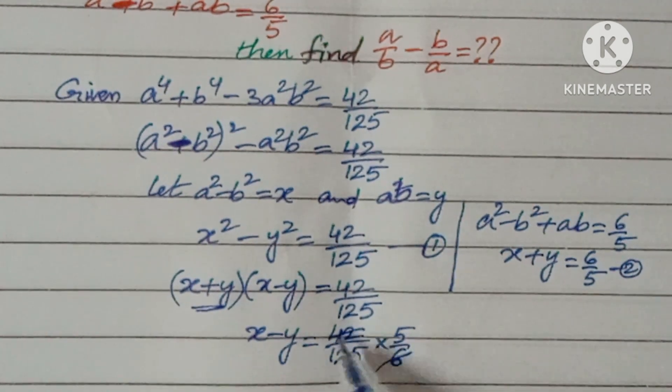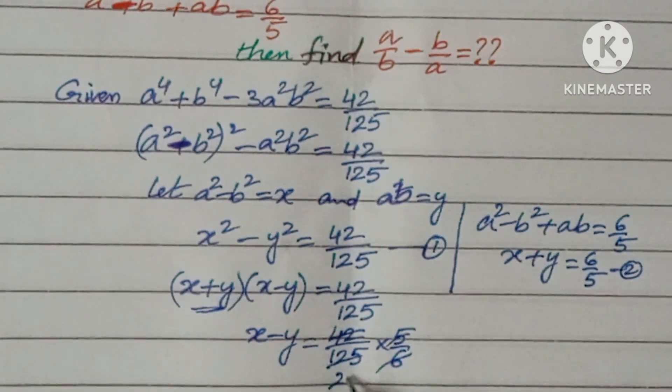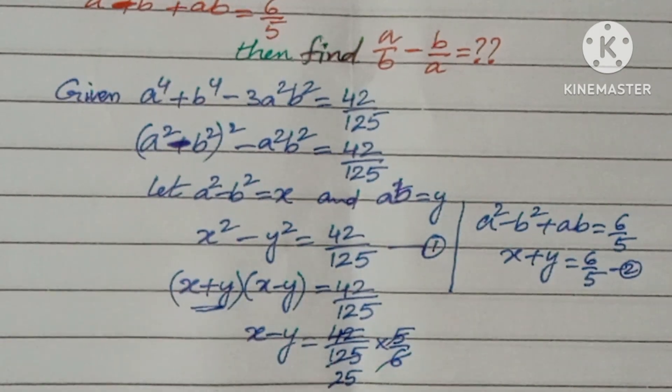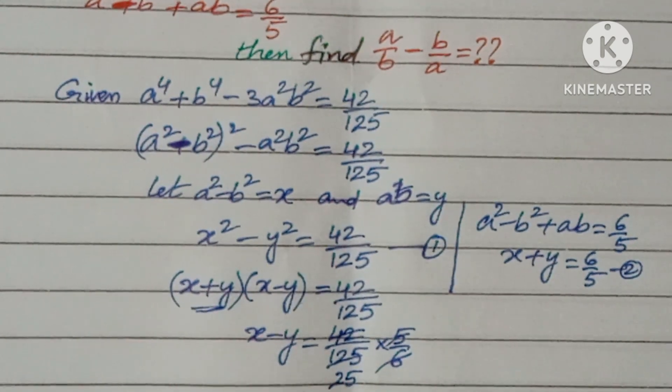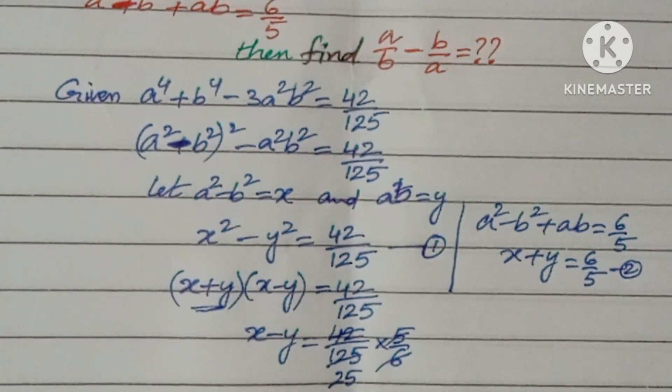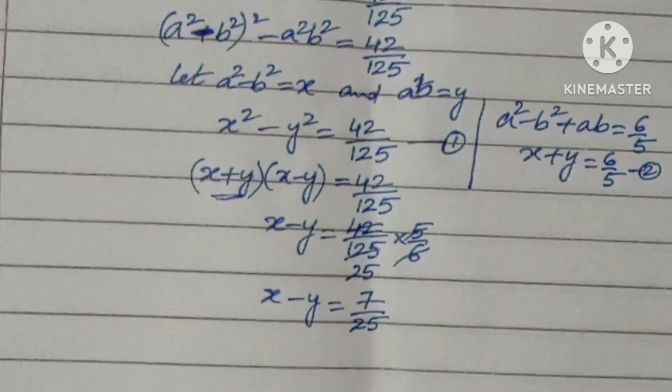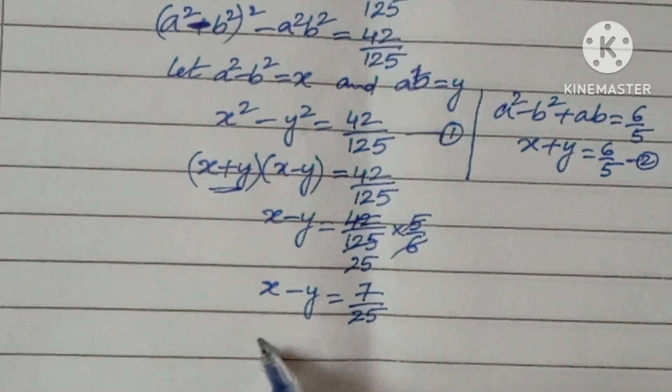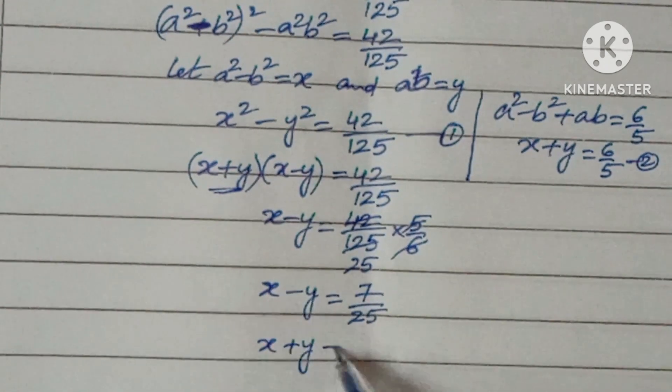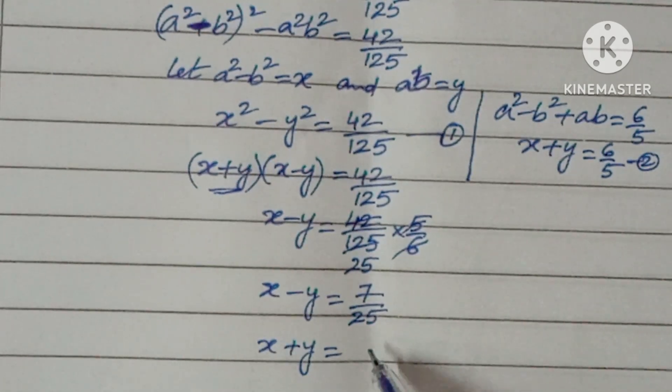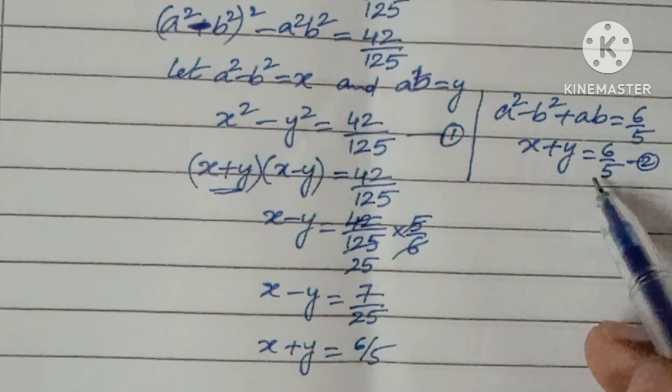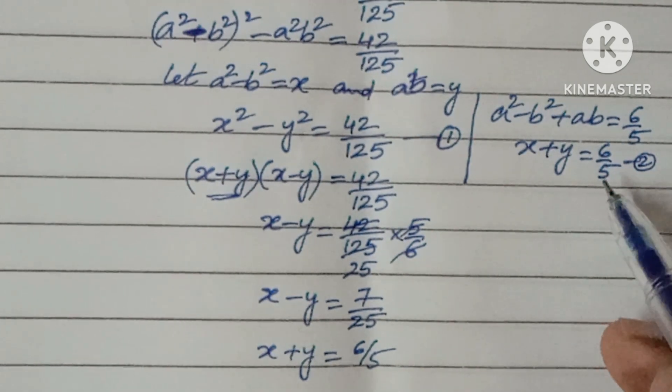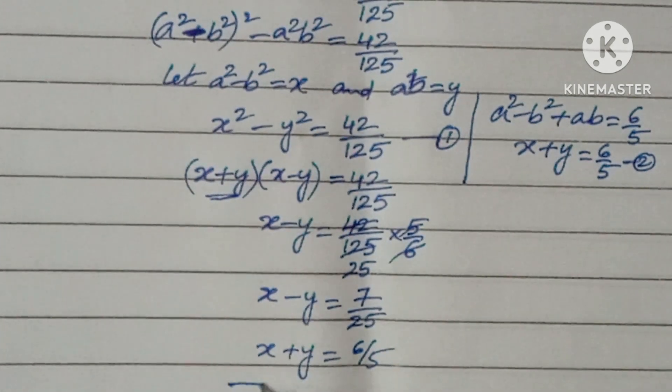So here some cancellation will be there. So the value will get x - y = 7/25. x + y = 6/5. Already here it is given x + y = 6/5.